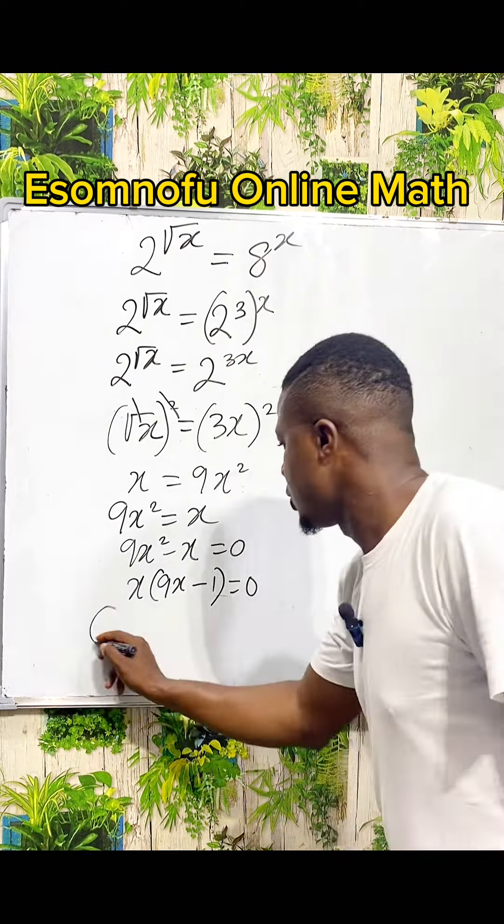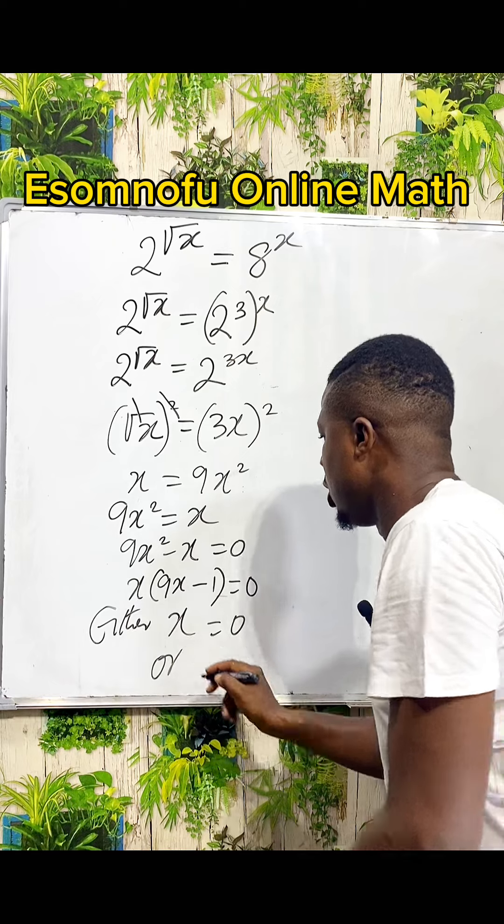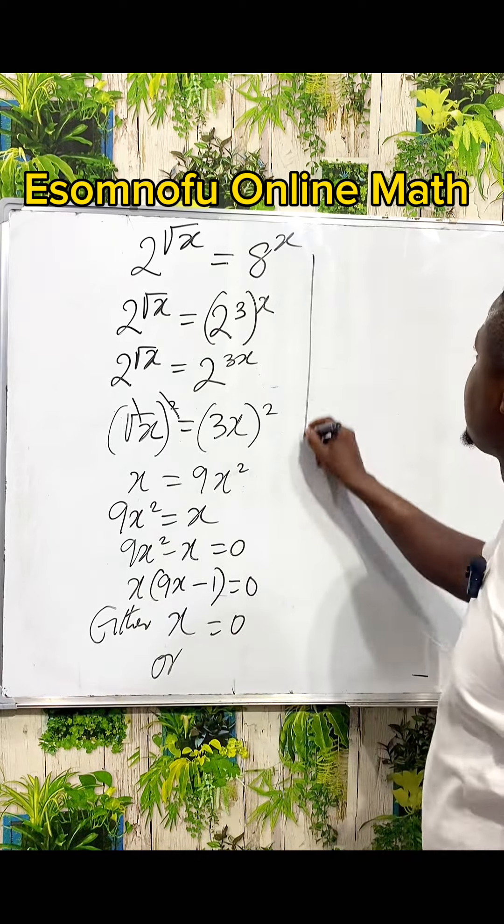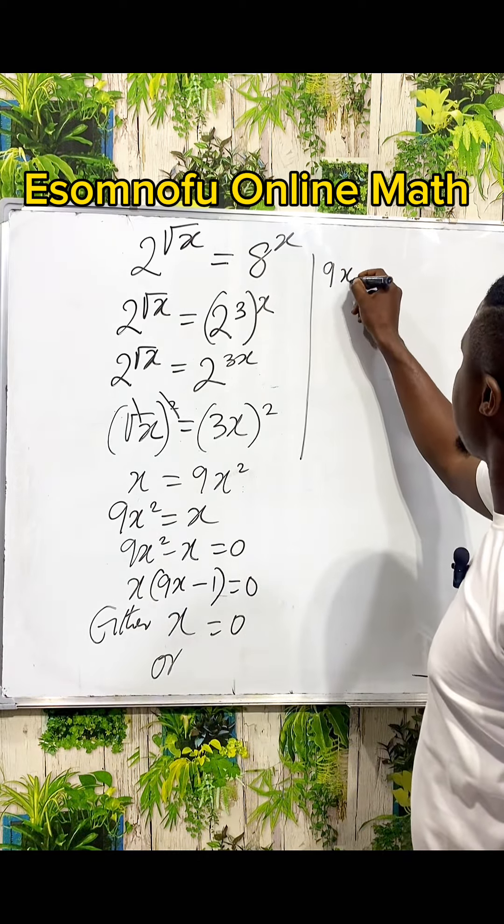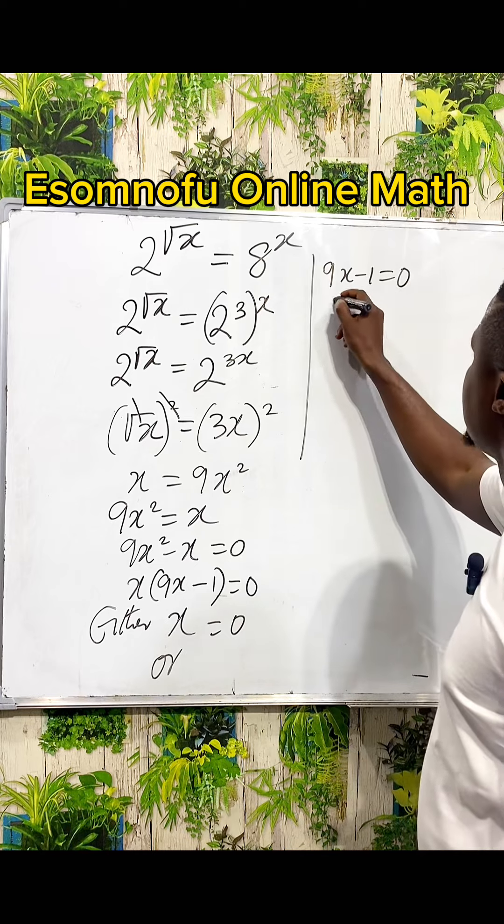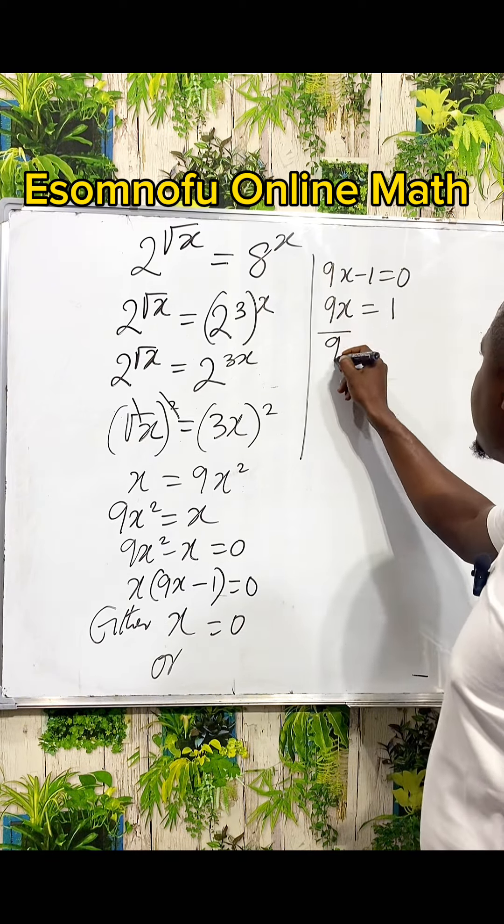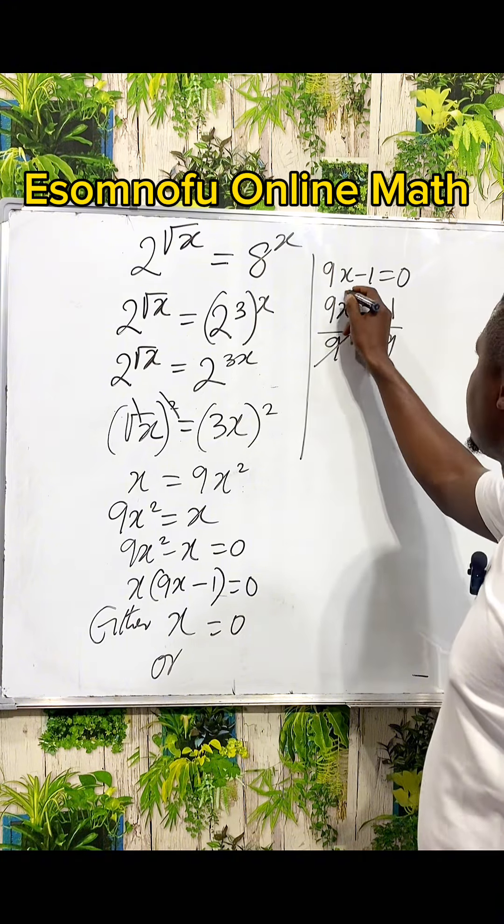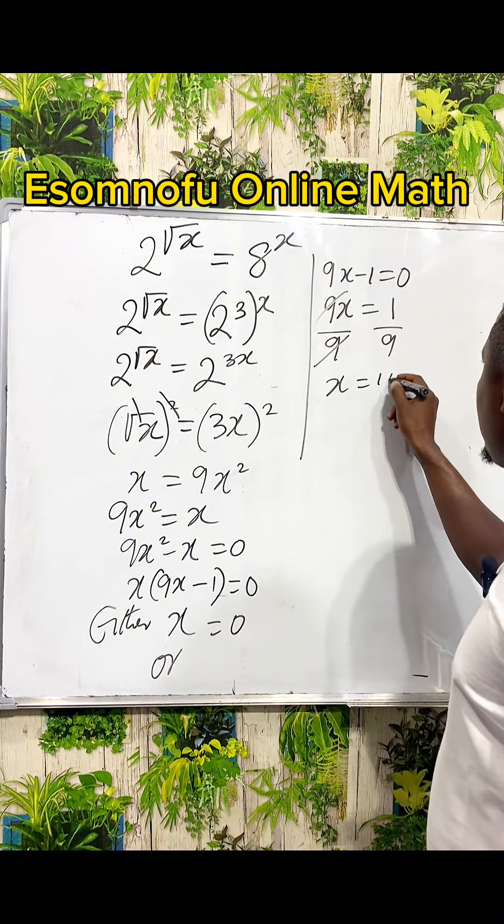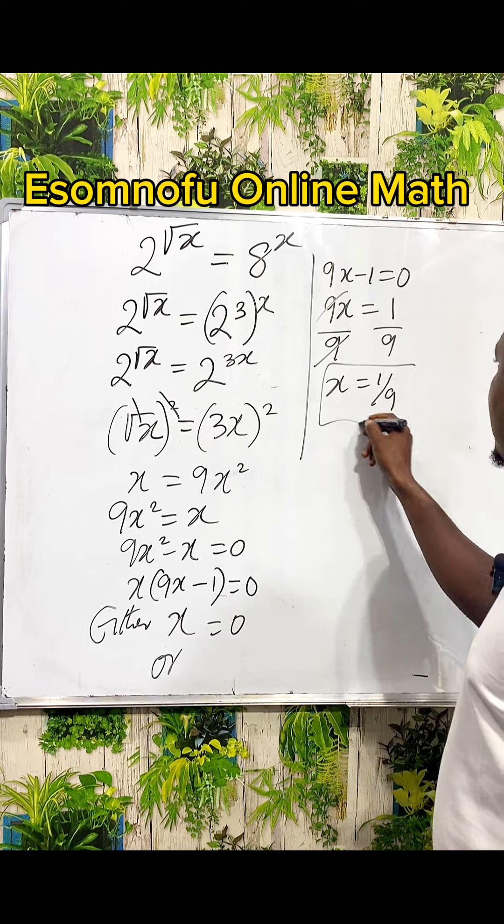So either the first x, this x, is equal to zero, or the bracket, or you say 9x - 1 is zero. 9x is 1. Divide both sides by 9, so x is 1 over 9.